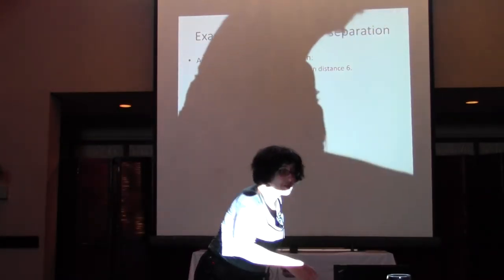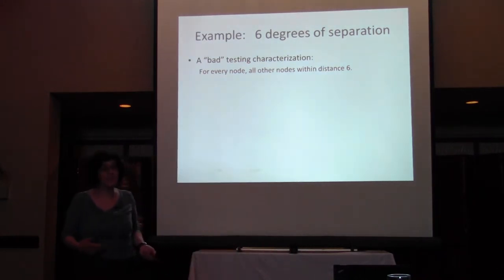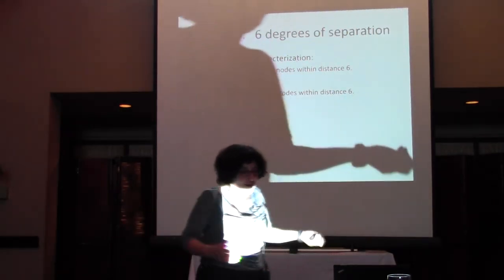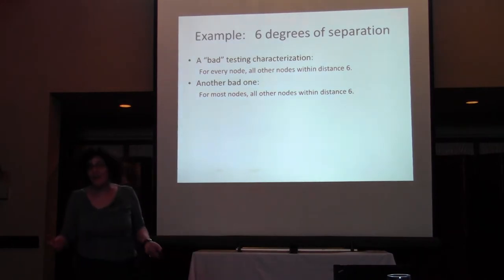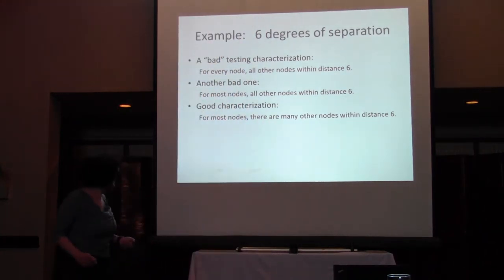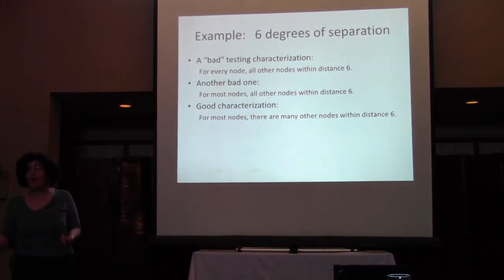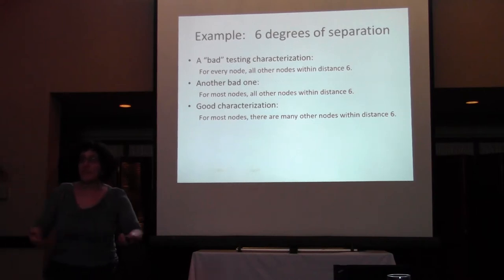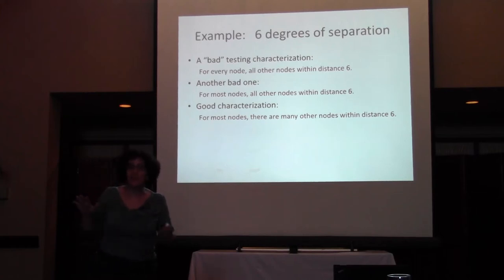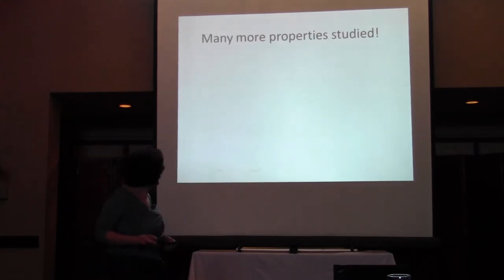Similarly, for six degrees of separation: a bad characterization is 'for every node, all other nodes are within distance 6' — not efficiently testable. Another bad one: 'for most nodes, all other nodes are within distance 6' — also not efficiently testable. A good characterization is: for most nodes, there are many other nodes within distance 6. That's something you can write a fast algorithm to compute, and you can show it's a good characterization — only good graphs pass this test.